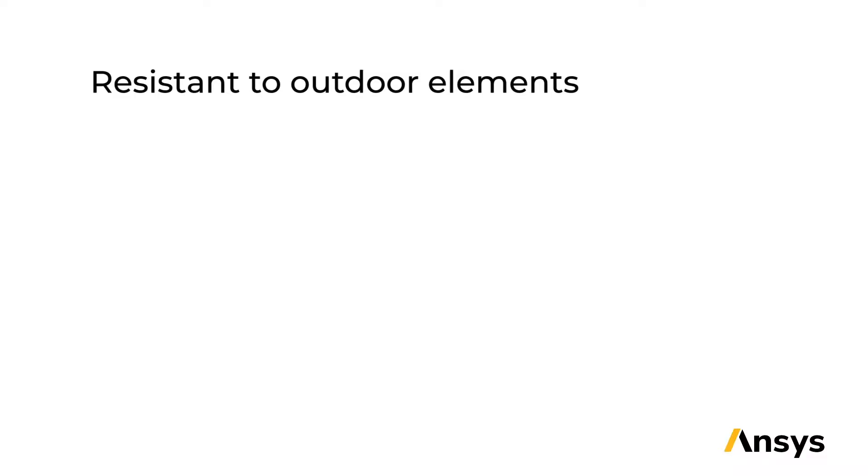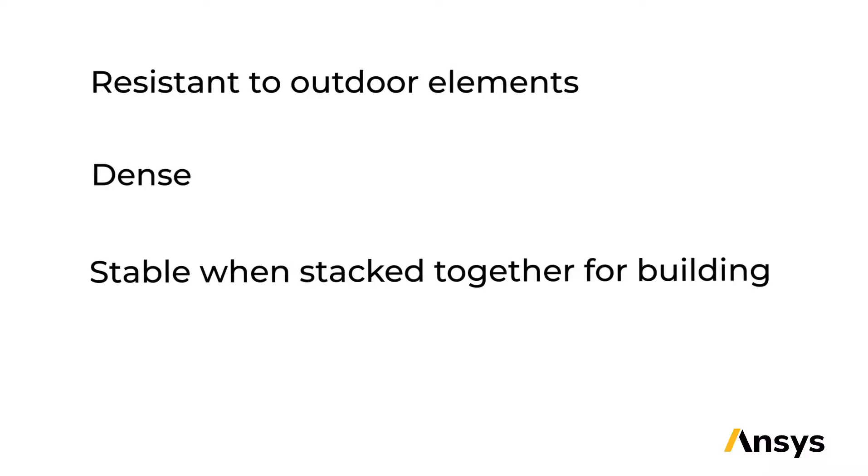Our third and final object has the following requirements: it must be resistant to outdoor elements, it must be dense, it must be stable when stacked together for building, and it must be cheap and easily made. Pause the video now or keep watching for the answer. Did you guess ceramics? Specifically non-technical ceramics, like a brick or a cinder block — like the one I found in my garage. These materials have been used for building for thousands of years and still are. They're often used for retaining walls and the fronts of homes. These ones can be found around the base of a tree in my front yard. I think this category of materials is often overlooked for its practicality and use.